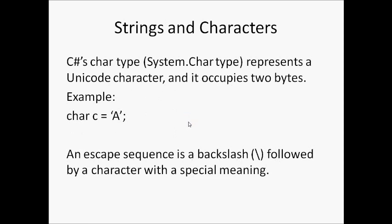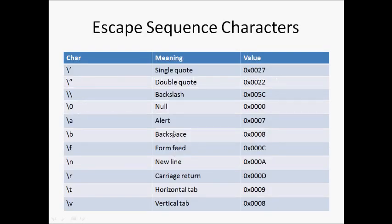Let's take a look at strings and characters. C-Sharp's char type (System.Char type) represents a Unicode character, and it occupies two bytes. Example: char c equals 'A'. An escape sequence is a backslash followed by a character with a special meaning. Escape sequence characters allow you to have a single quote in a character. To have a double quote, you will use the backslash followed by the character.